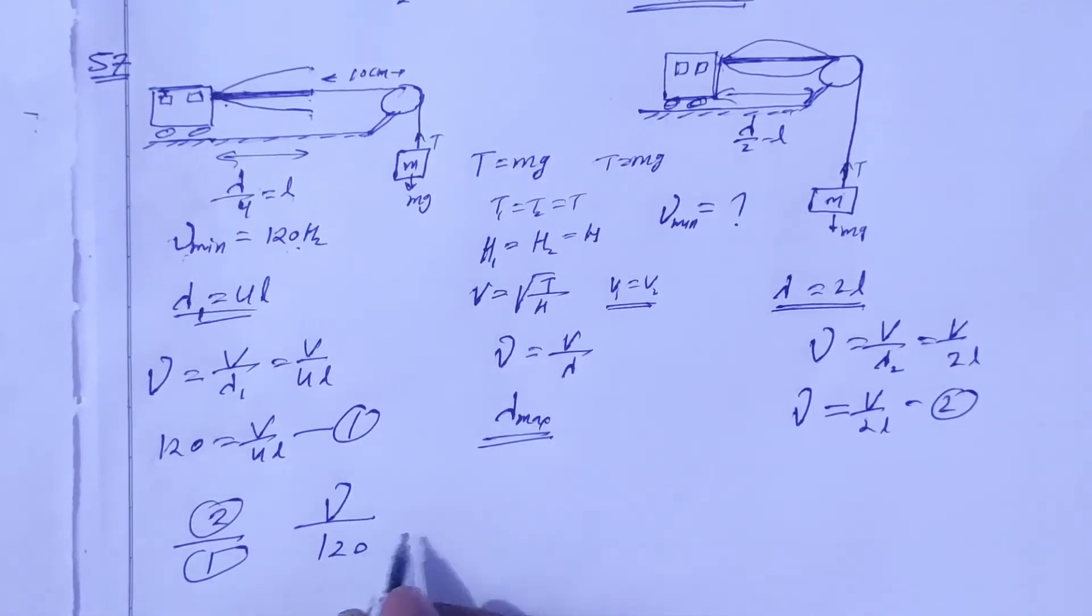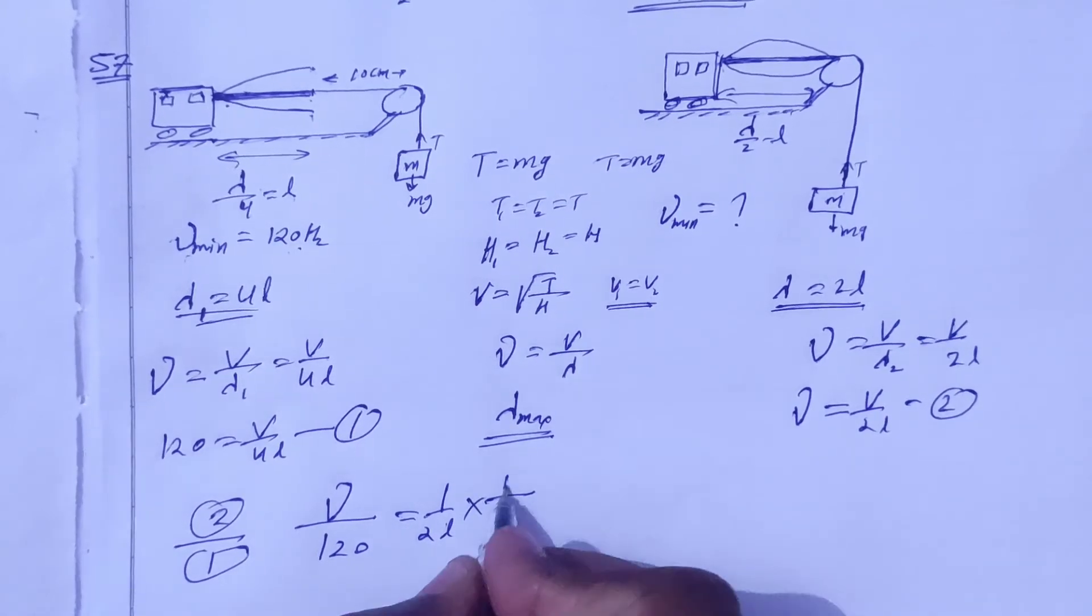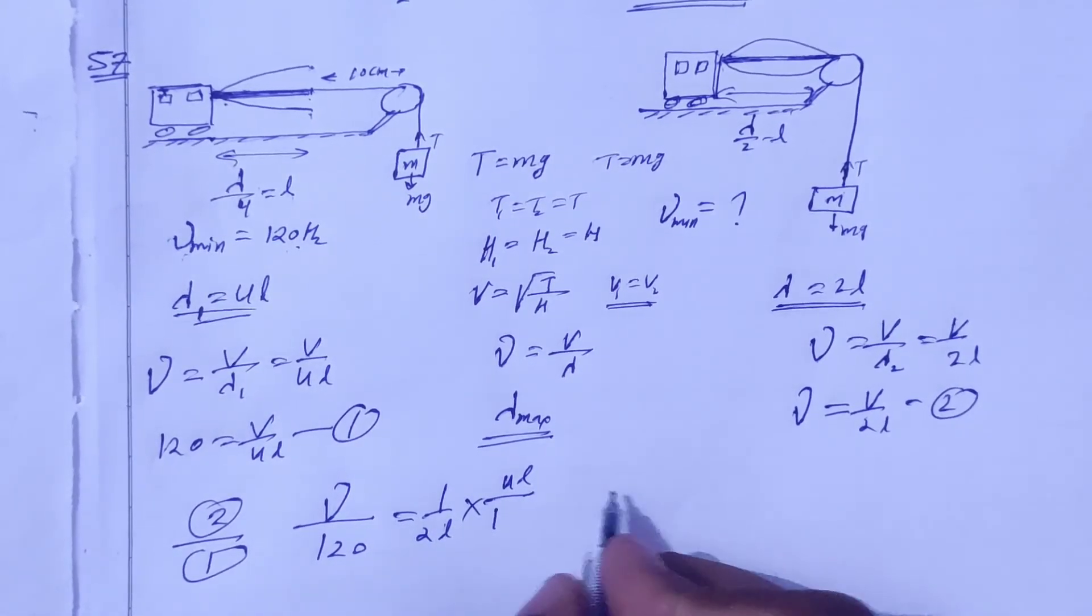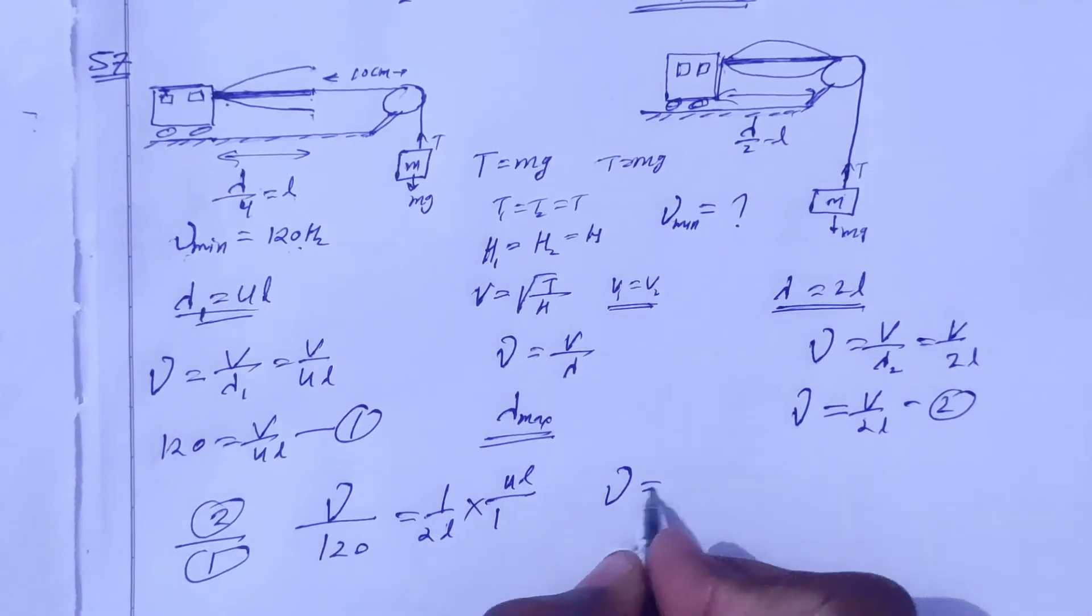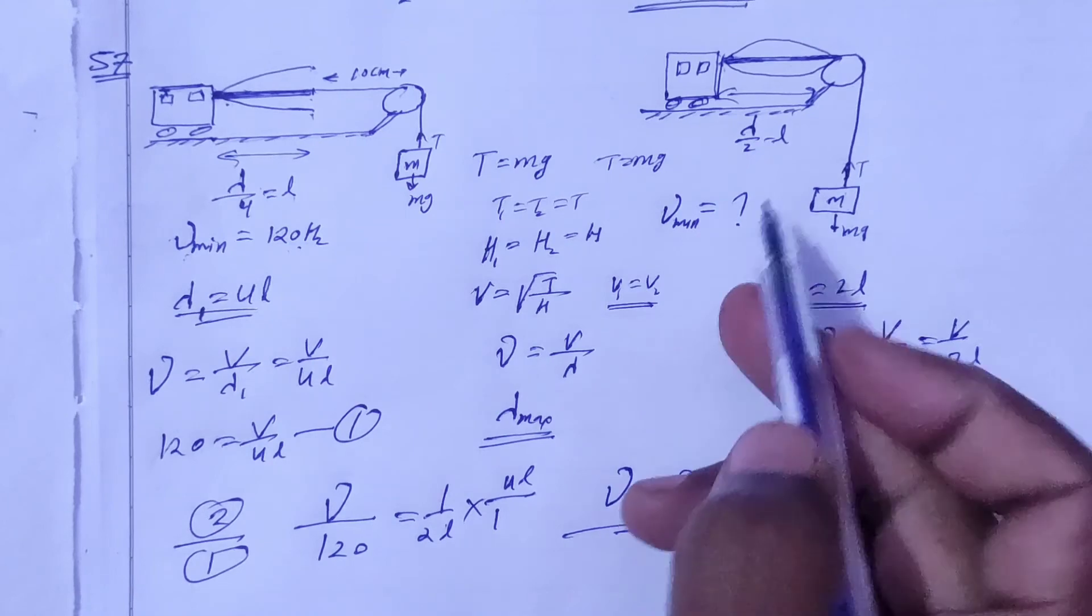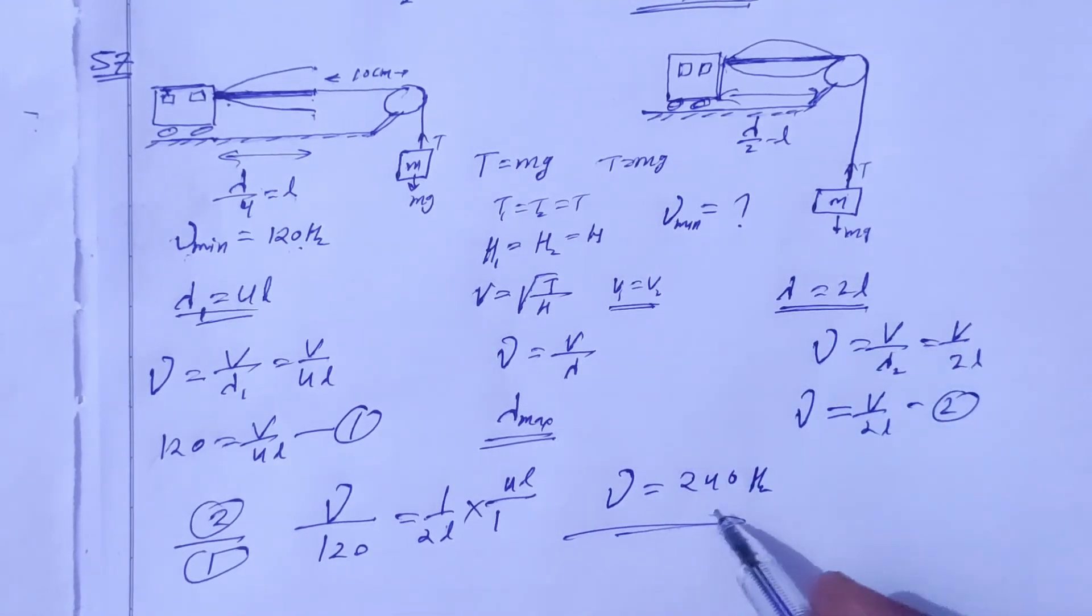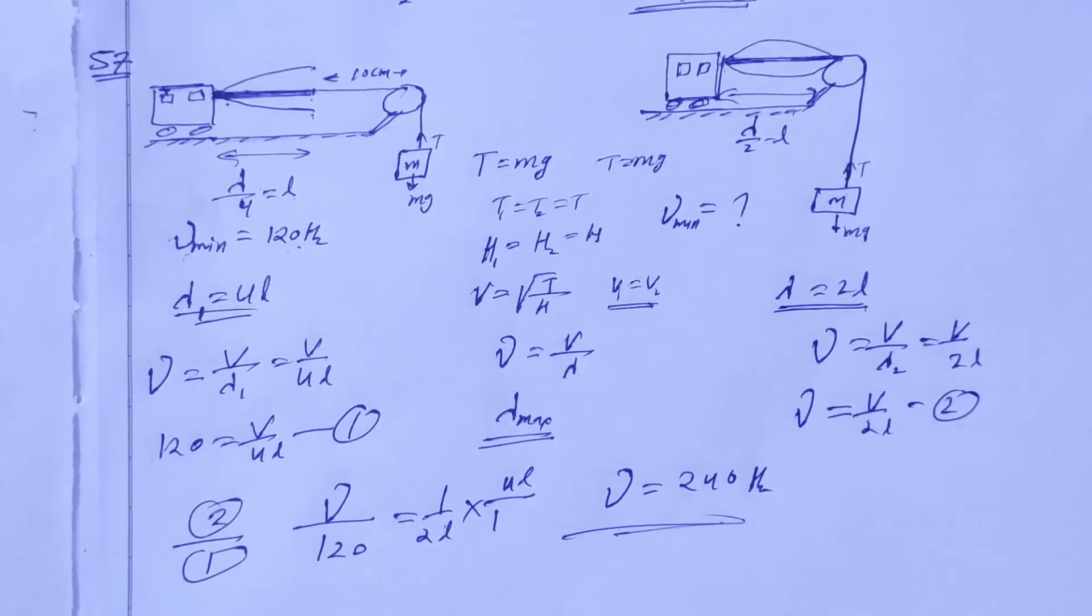Divide equation 2 by equation 1, so frequency new by 120 is equal to 1 by 2L times 1 by 4L. L will cancel, 2 cancels, so the frequency is equal to 240 hertz. The minimum frequency is 240 hertz fundamental mode frequency.